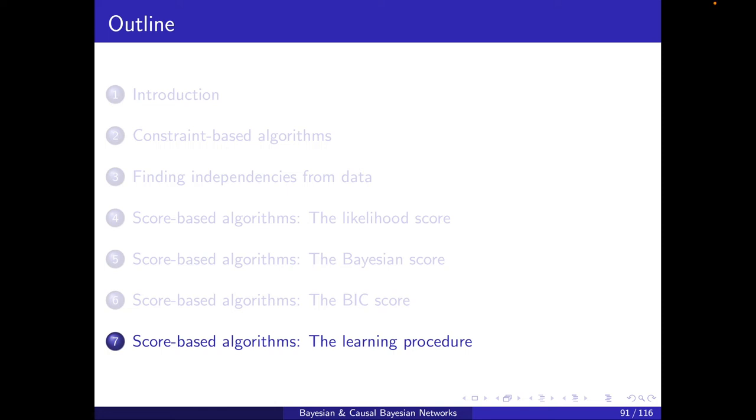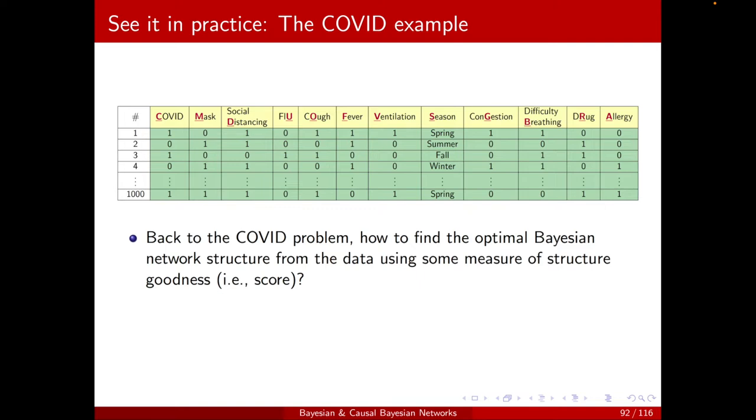Hello and welcome to Section 7, Score-Based Algorithms, the Learning Procedure. Back to our COVID example, imagine that we're given some score, for example, the likelihood. How can we perform a systematic search to obtain the optimal Bayesian structure? So rather than focusing on a score, here we will be focusing on the search procedure itself.